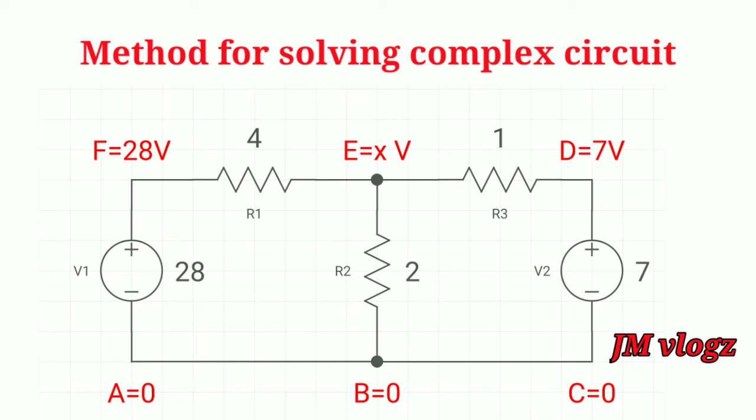Similarly, we can find the current through R1, which is the potential difference divided by resistance. The potential difference is X minus 28, divided by R1 is 4. So X minus 28 by 4 is the current passing through R1.